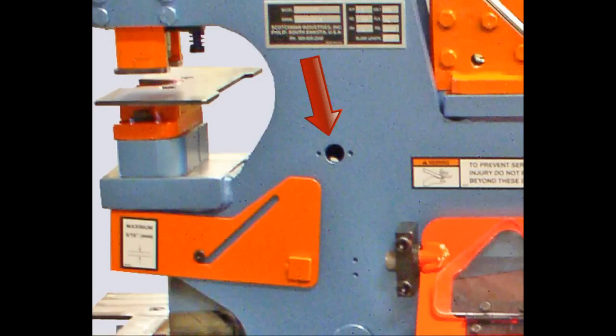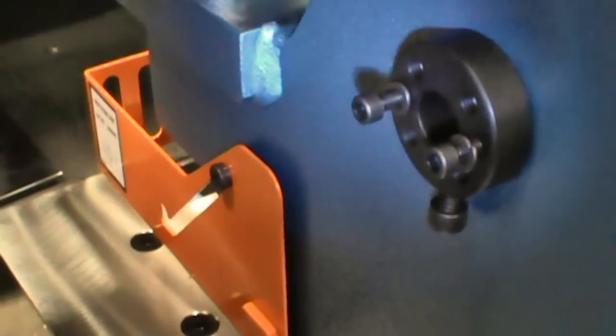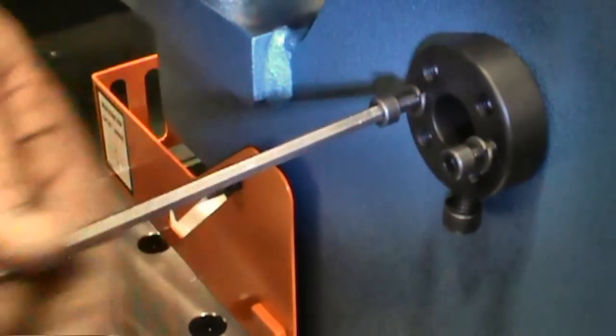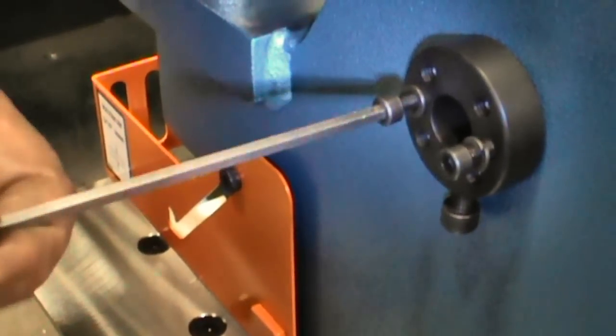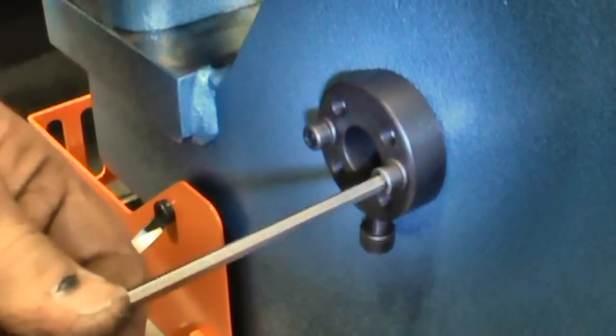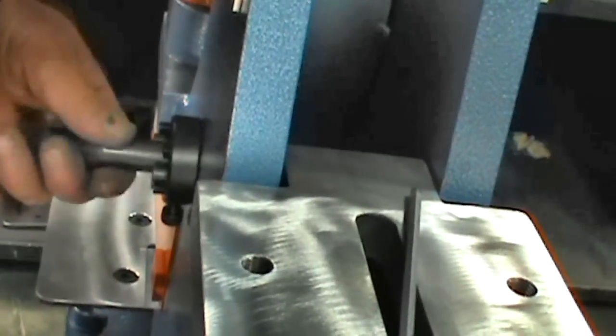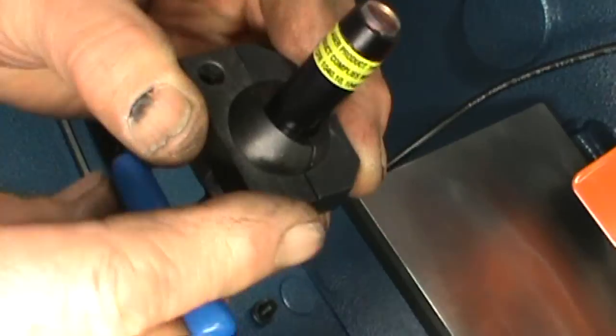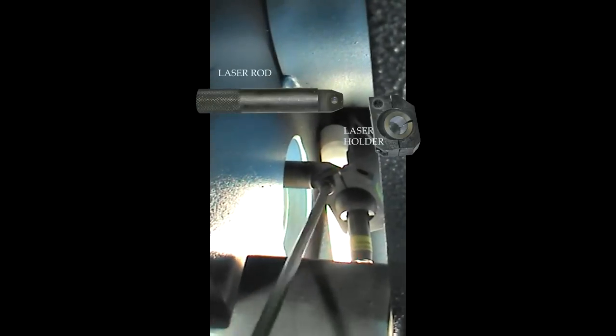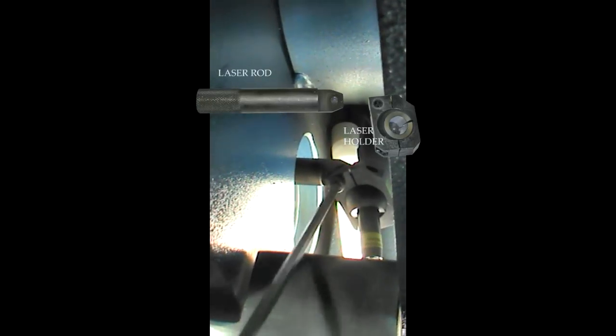Now we are putting on the rod mounting bracket. Leave mounting bolts slightly loose for adjustment later. Now slip in the laser rod. Bolt the laser holder to the laser rod.